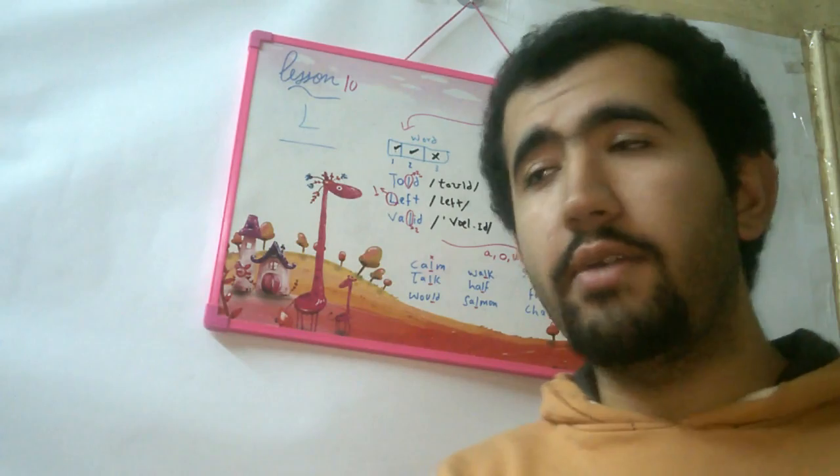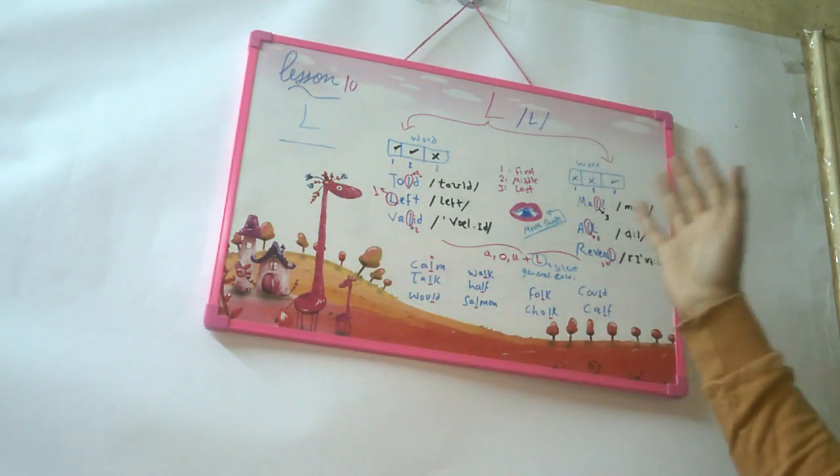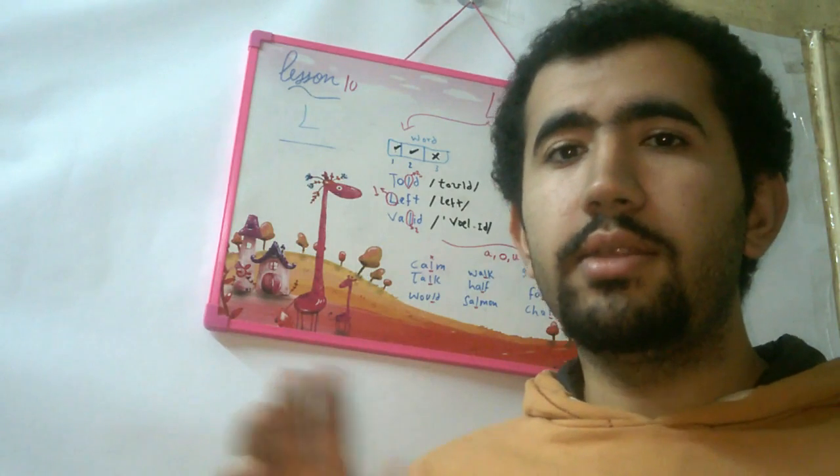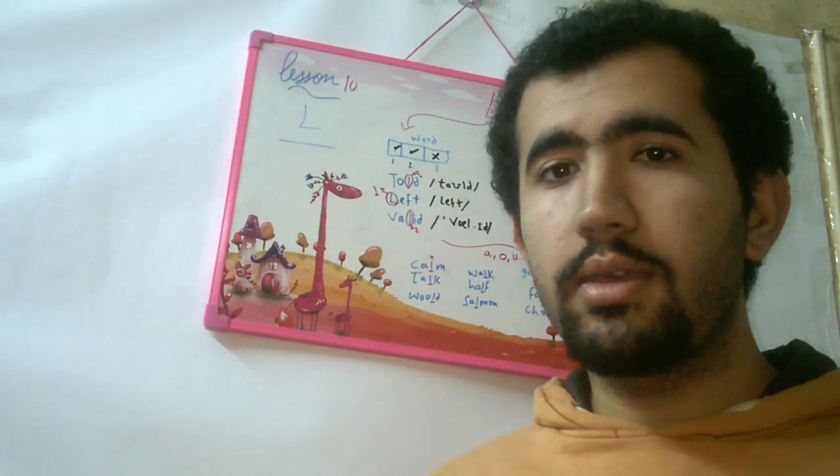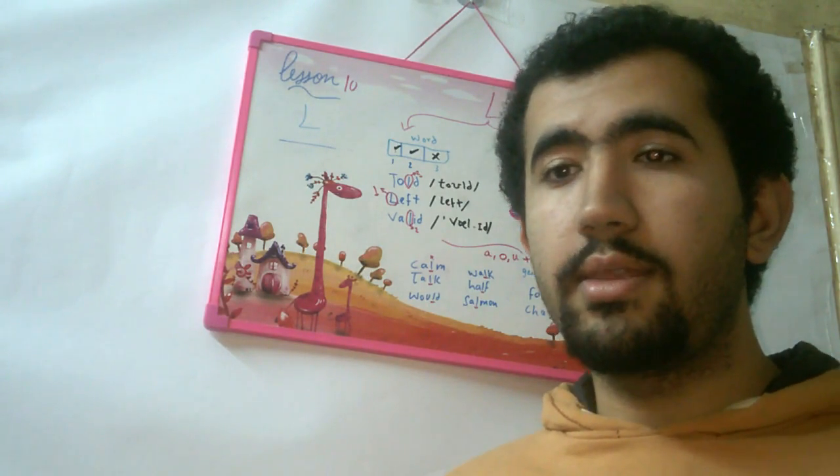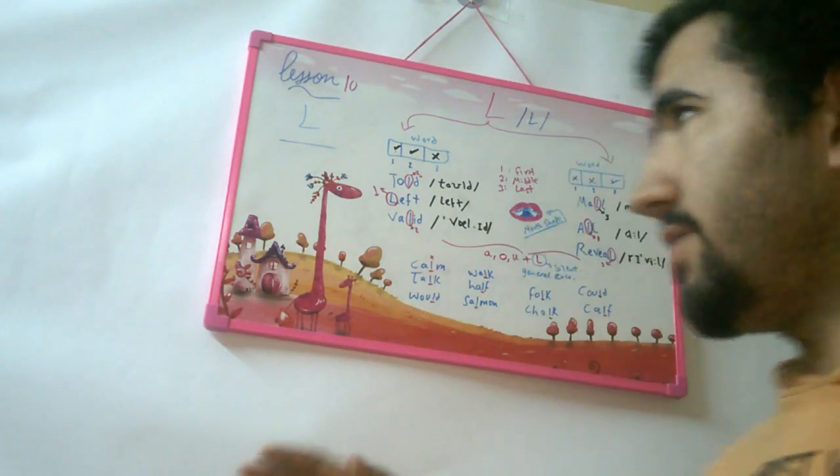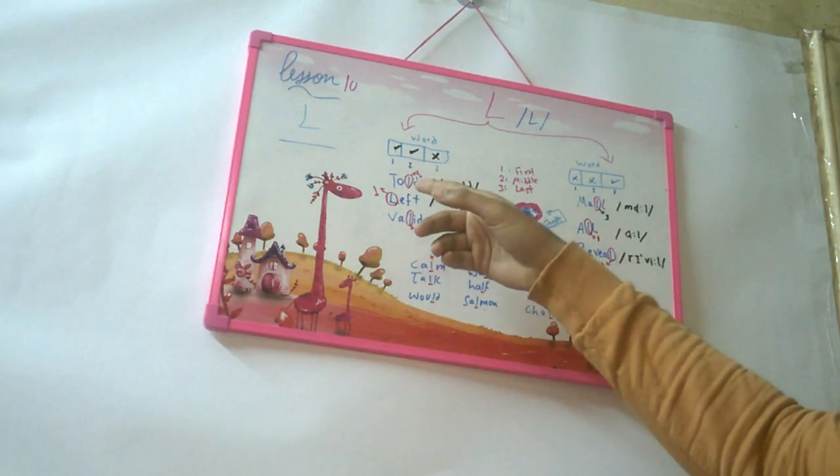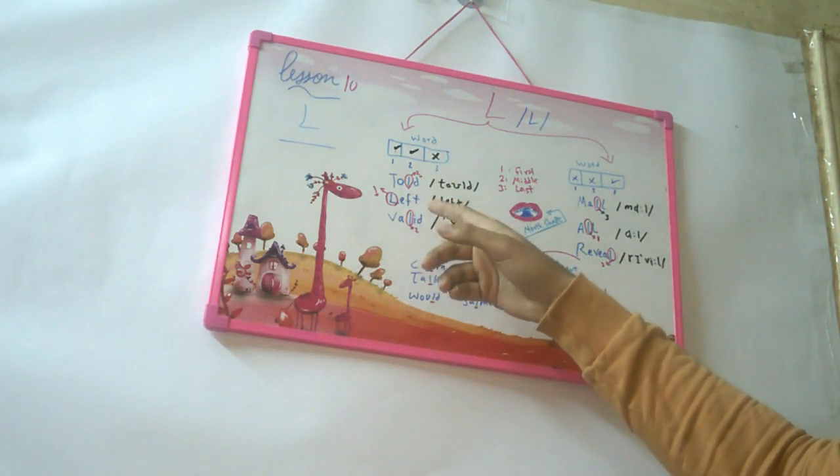So what we have learned so far, we have learned that the L has two pronunciations, depending on the position of the L in the word. Either it's beginning the word, or the middle, or the last. If it's in the beginning or the middle, it's like L, and like you might see here, told, and left, and valid.